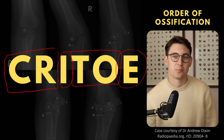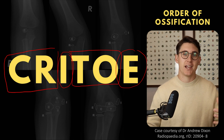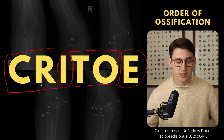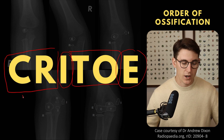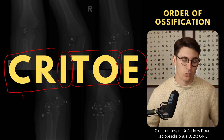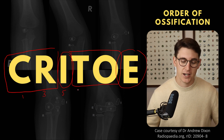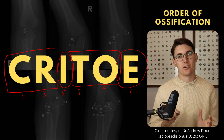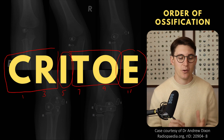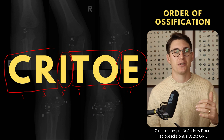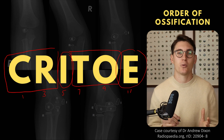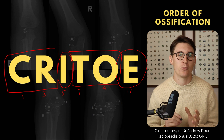Now, what ages are we expecting these centers to appear? Many people learn it in a simple way by going up the odd numbers: 1, 3, 5, 7, 9, 11. You'll get by doing that, but it's not as accurate as the method I'm going to show you now. I would recommend trying to learn this, especially if you're going to write a primaries exam or core exam, to learn the slightly more complicated way because you're going to be a little bit more accurate.